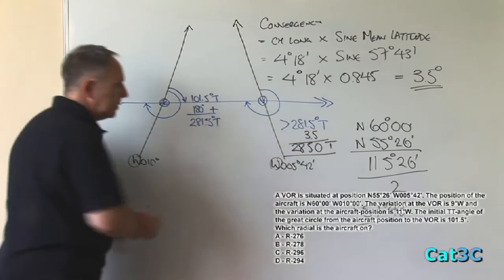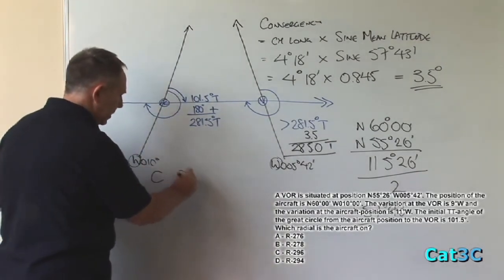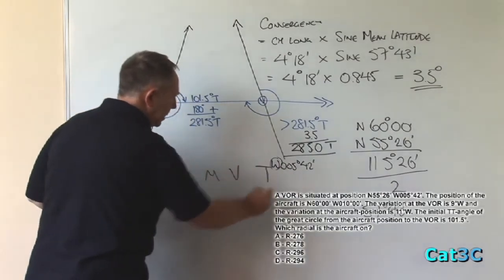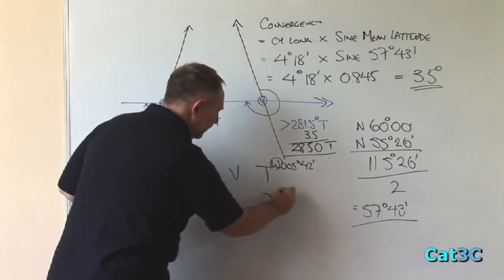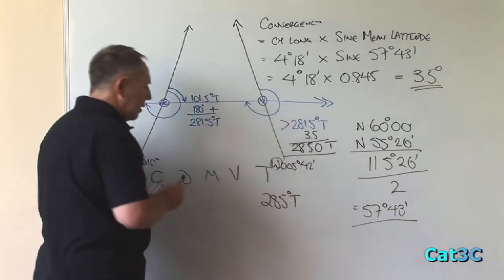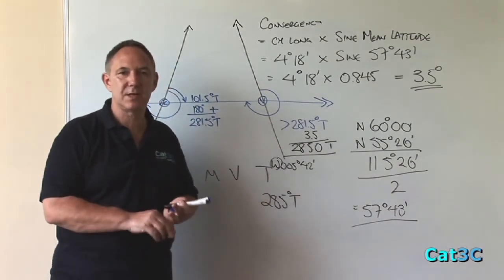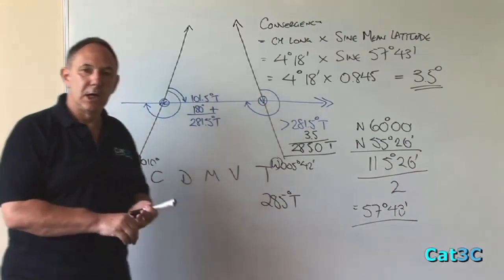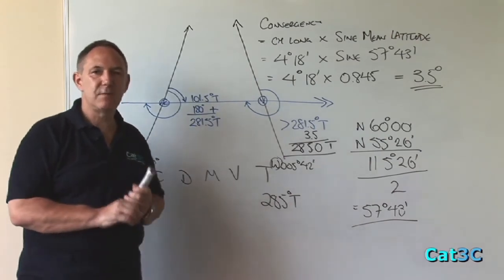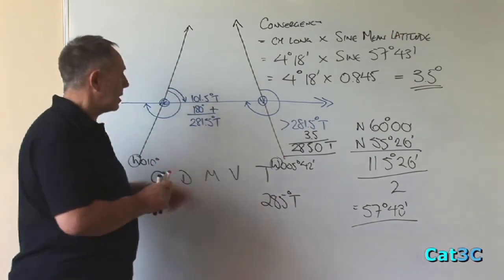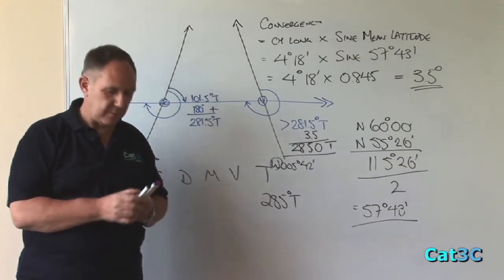To convert the true bearing into a magnetic bearing, we once more apply Cadbury's dairy milk. Plot in our known true bearing, 285 degrees true. Then we plot in the variation. However, we've got two variations. We've got the aircraft at 11 degrees west and the VOR at 9 degrees west. You always apply the variation where the bearing is measured. In the case of a VOR, the bearings are measured at the VOR ground station itself, and therefore we must apply the variation of 9 degrees west.